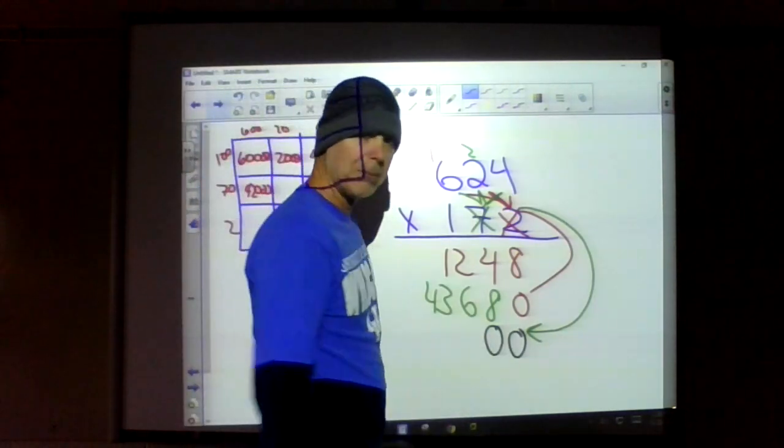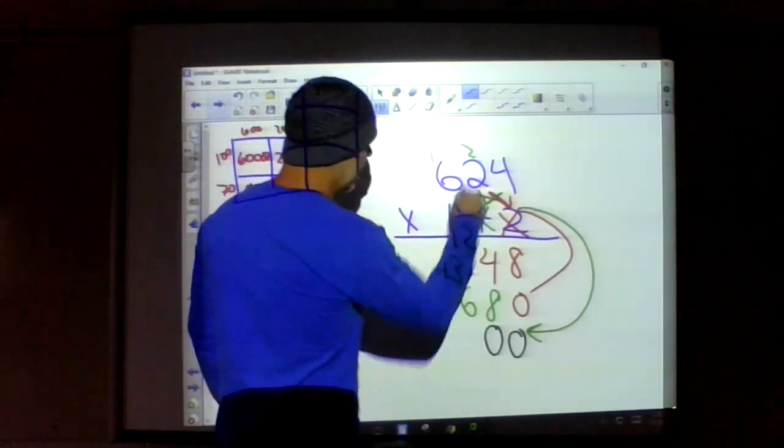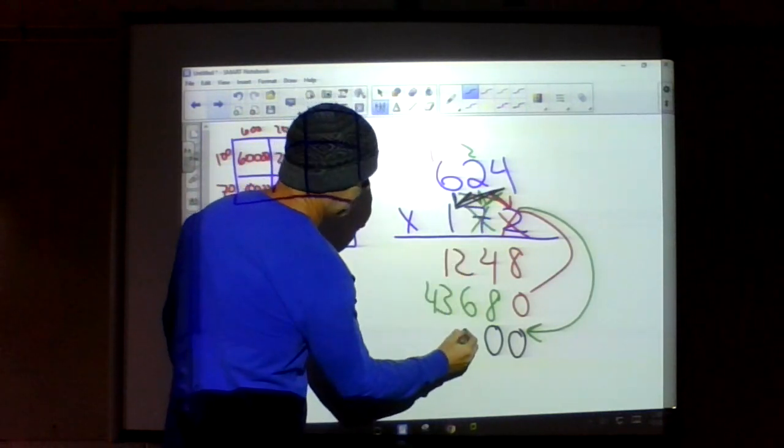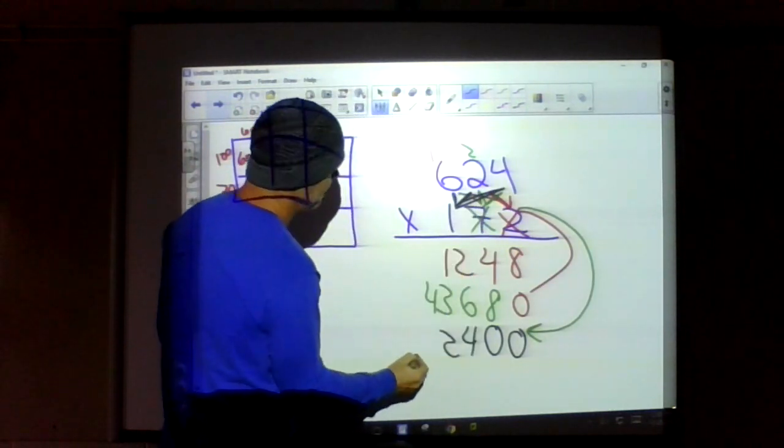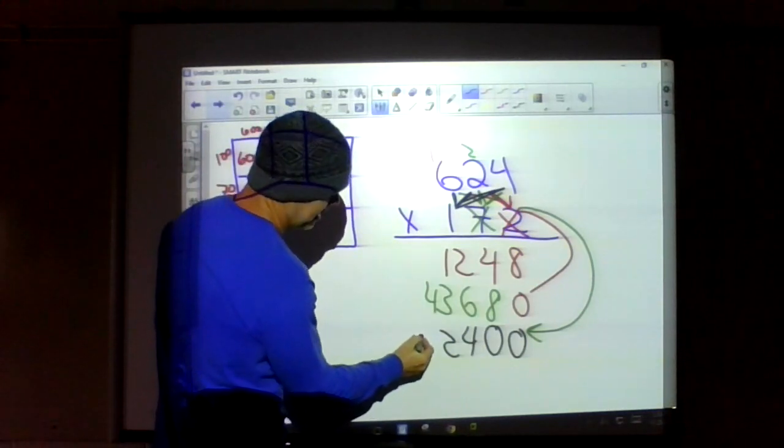Seven times four is 28, I carry my two. Seven times two is 14 plus the two is 16. Seven times six, that's a tough one for me, but 42 plus one is 43. Very good. Now I've got two X's. What do you think I need to start this next partial product with? Well if I have two X's, guess what? I get two O's because now I'm multiplying through in the hundreds place.